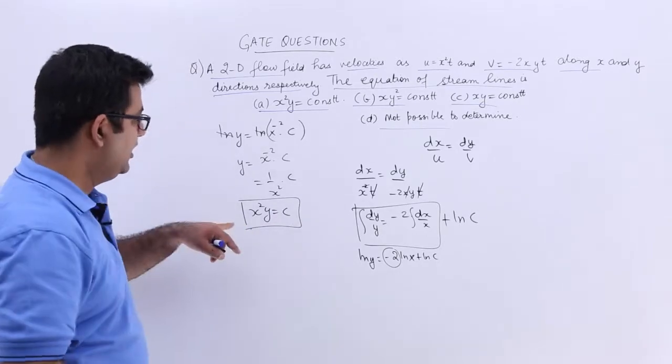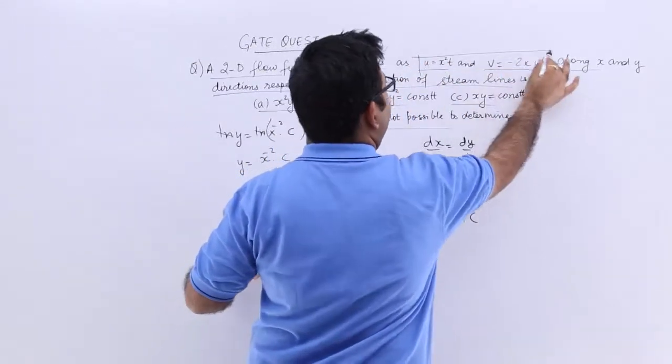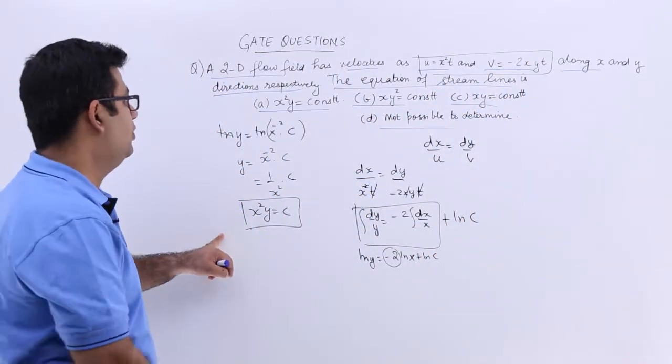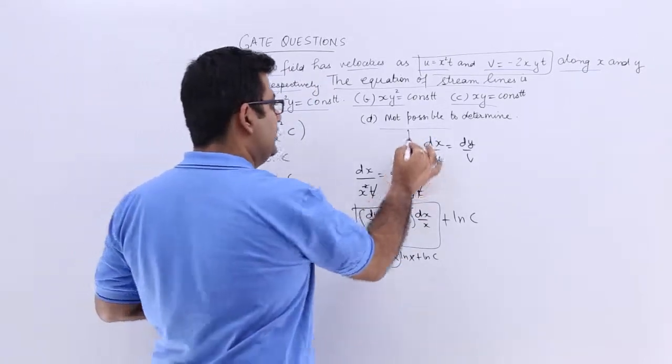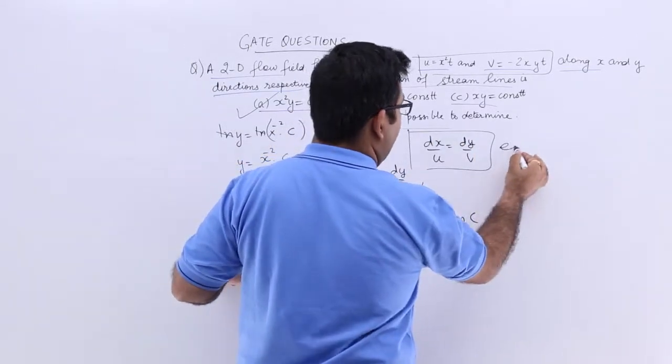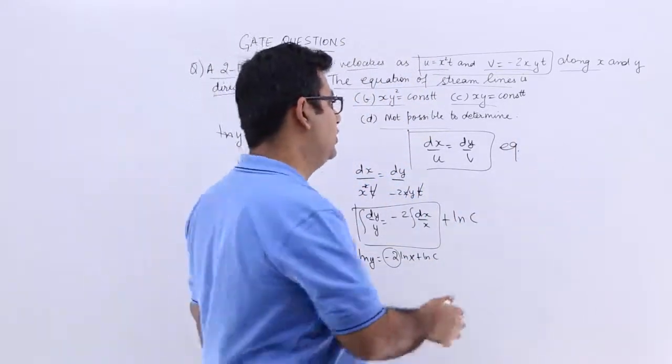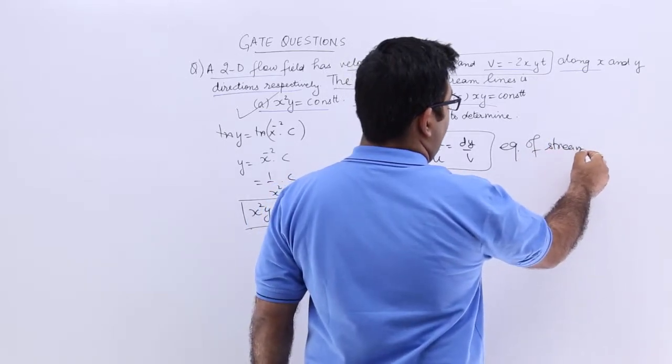So this is the equation of the streamline for a flow field with these two velocity components. This corresponds to option A. So always remember the equation for a streamline to find out the desired equation. So this is the equation of streamline.